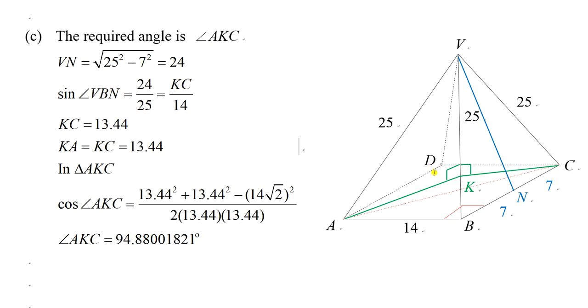Similarly, because these two triangles are congruent, KA equals KC equals 13.44. And the required angle we want to find is angle AKC, which is inside the solid.